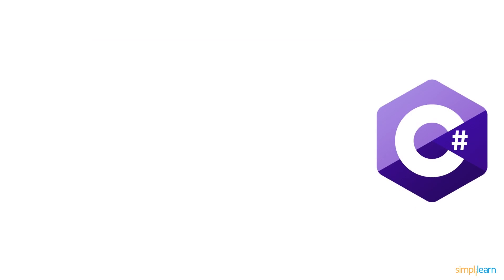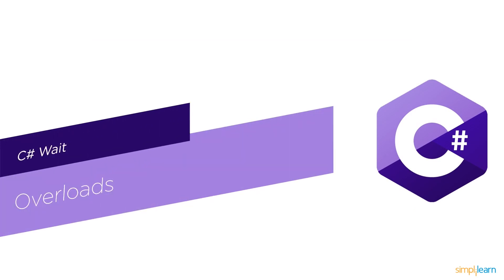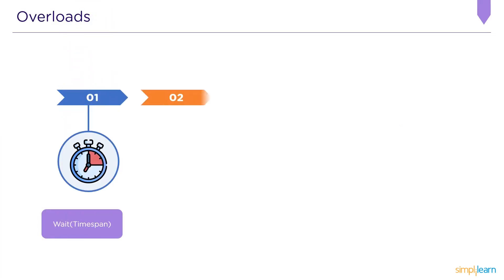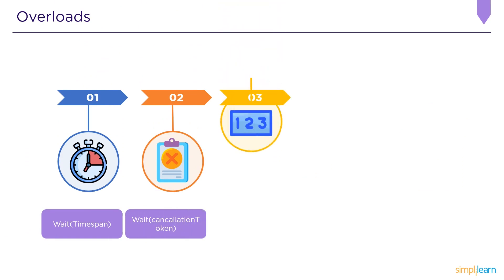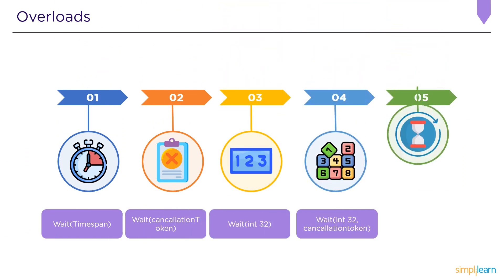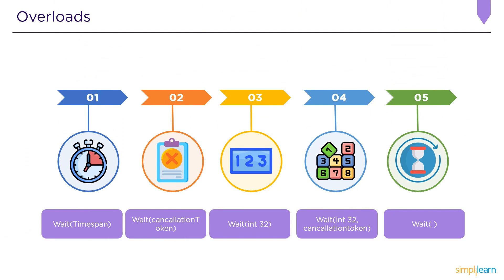Next, we'll look at some C# Wait overloads. There are five types of C# Wait overloads. First, Wait(TimeSpan). Second, Wait(CancellationToken). Third, Wait(Int32). Fourth, Wait(Int32, CancellationToken). And finally, the basic Wait() function.